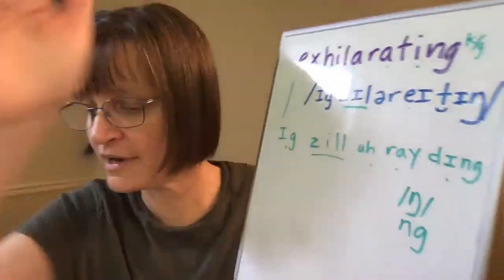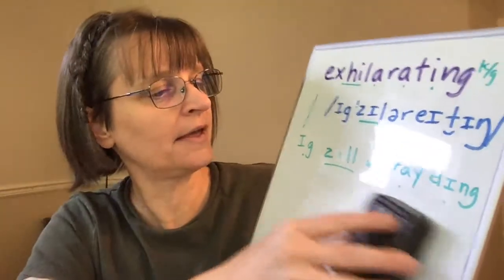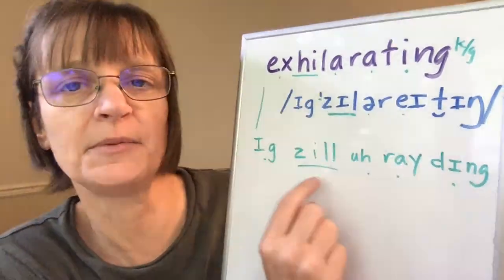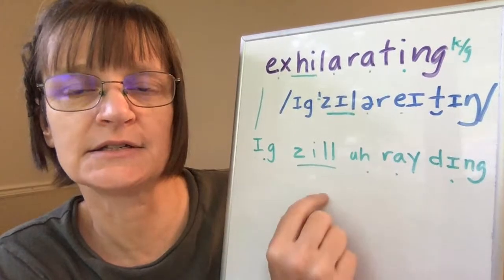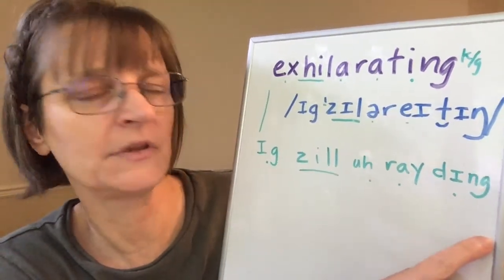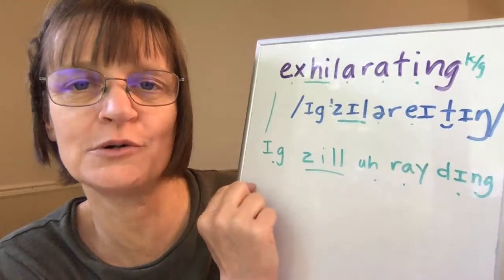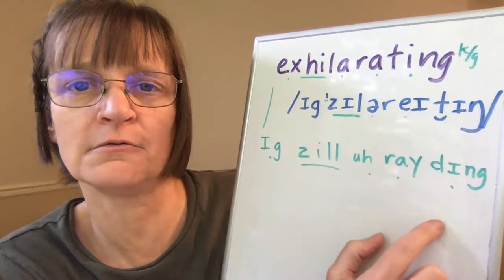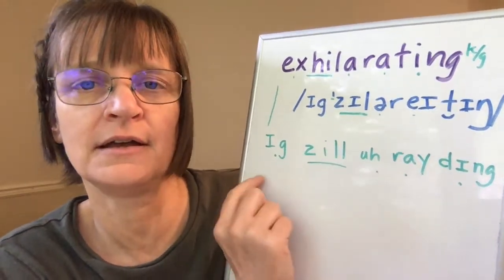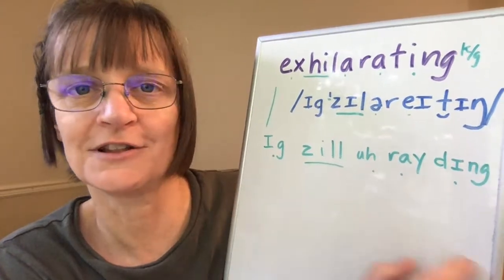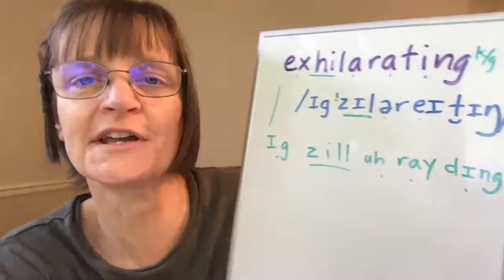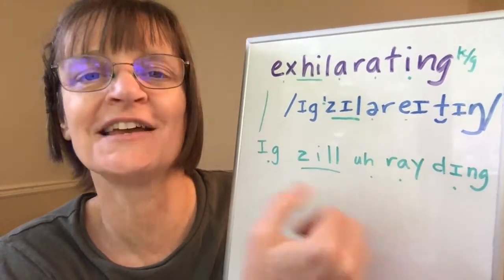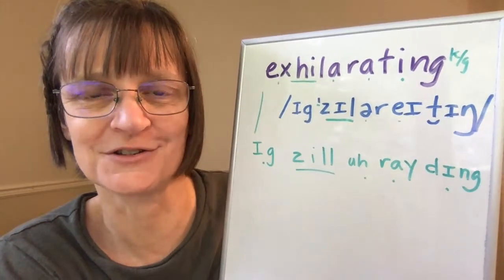There are a lot of different accent challenges in this word. You might want to build it from the stress syllable: ZIL, ZIL, exhilarating. You might also want to take it slowly syllable by syllable and then speed up. For example: ig — zil — a — ra — ding — exhilarating, exhilarating. Once you can say the word 'exhilarating' by itself, begin trying to use it in short phrases so it comes more easily when you're speaking.